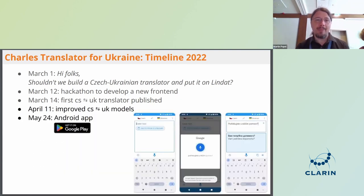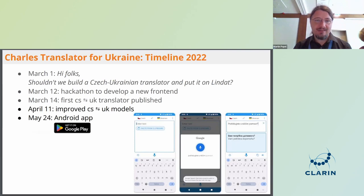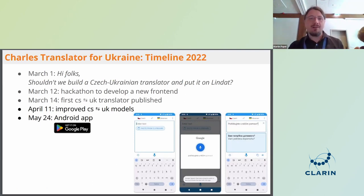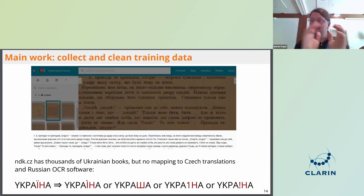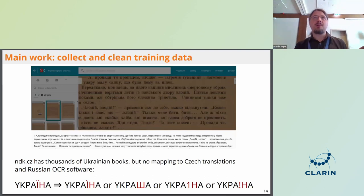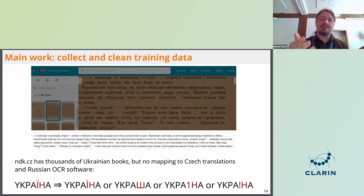After one month we improved the quality of the models and released an Android application with voice translation. The work is ongoing still today. The biggest goal is to collect more training data and clean it. For example, I'm communicating with Czech national libraries — there are thousands of Ukrainian books and some have Czech translations, which could be nice parallel data. But we need to first digitalize it properly, because the existing digitization used OCR probably set up for Russian, so Ukrainian-specific letters were not recognized correctly, with different errors each time.